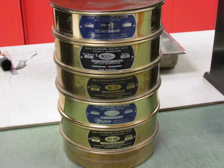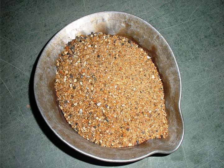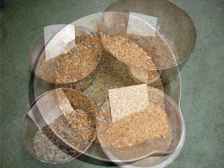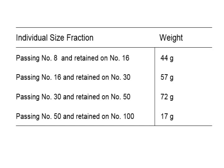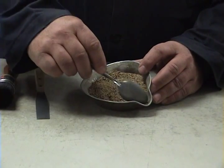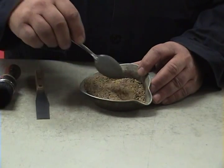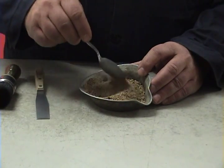Shake the sample using the appropriate sieves. To run the FAA test, you need a final composite sample size of 190 grams. This sample is created by combining prescribed amounts of material from the number 16, 30, 50, and 100 sieves. The amounts needed are shown in this table. After obtaining the individual portions, combine the fractions and thoroughly mix, making sure there is no segregation in the sample.